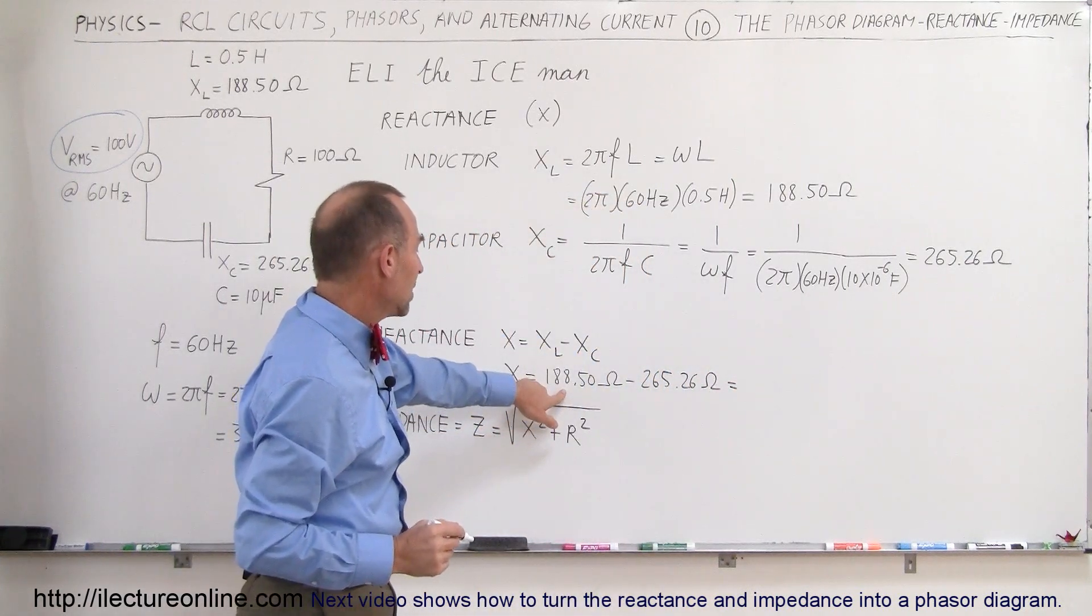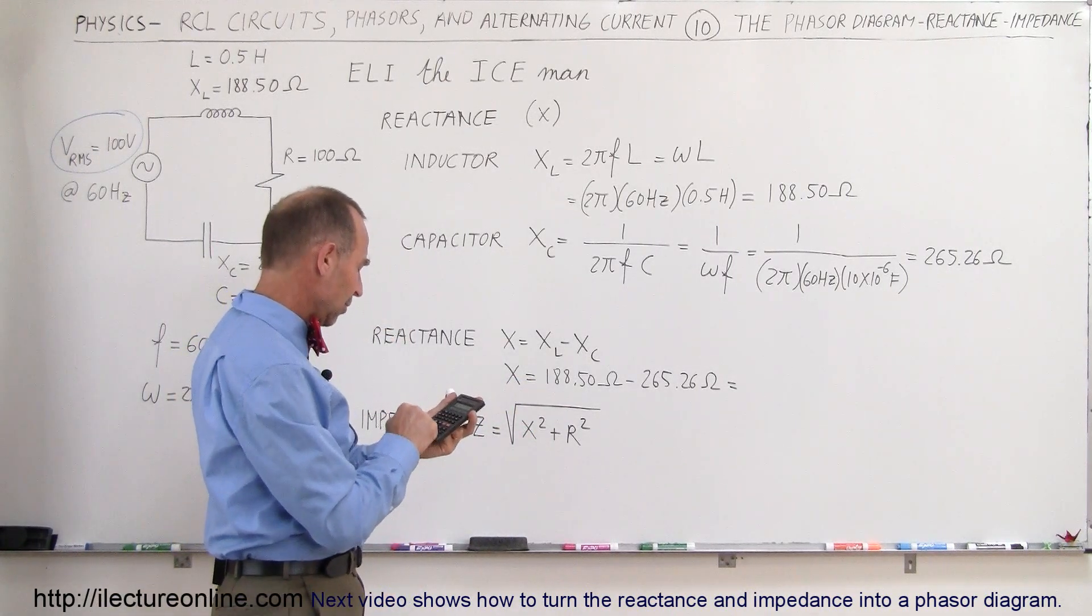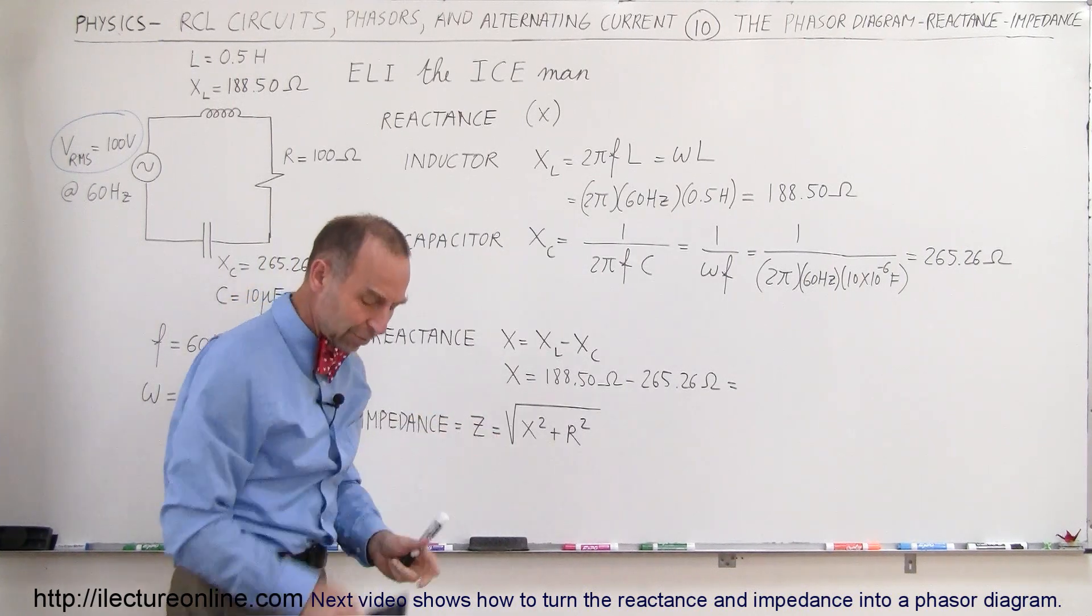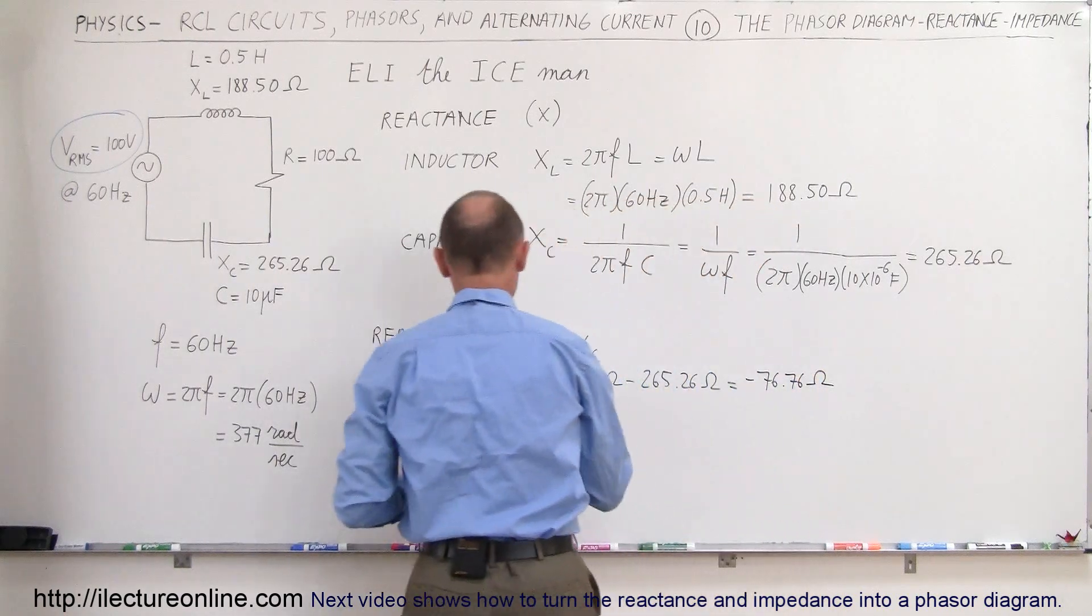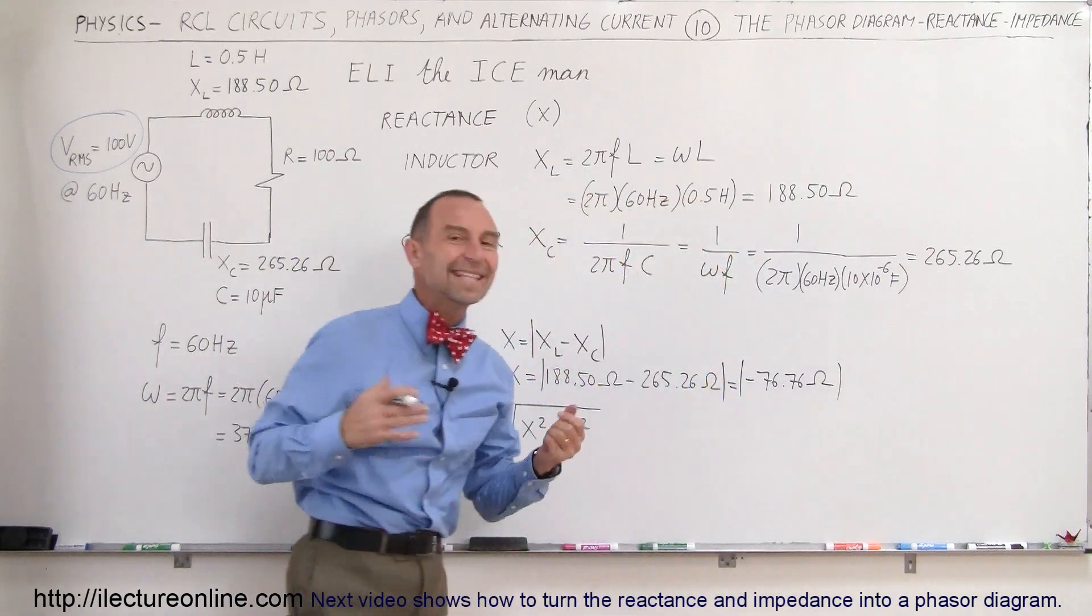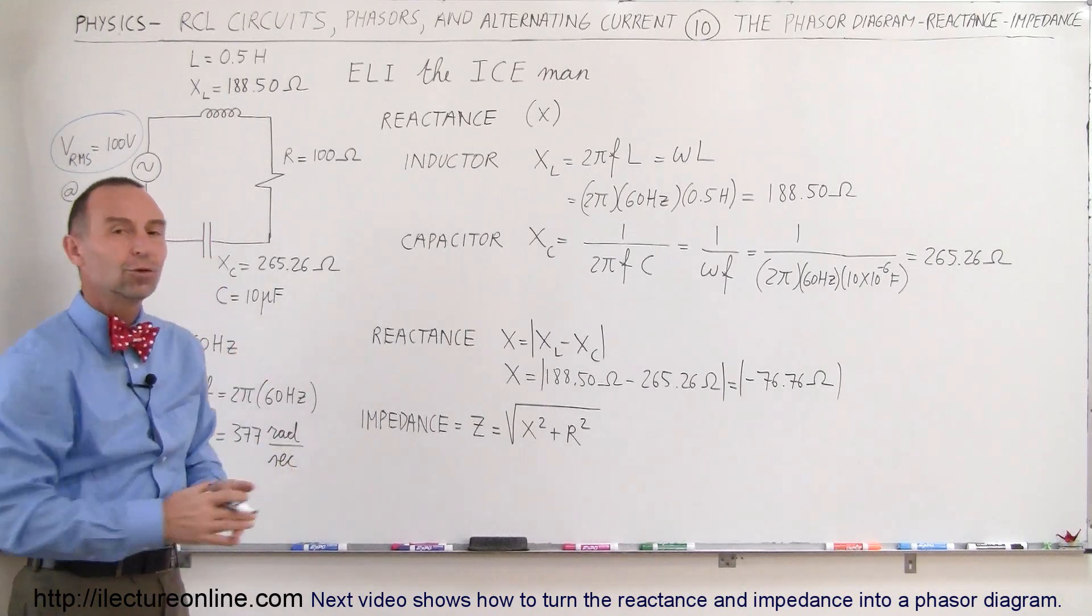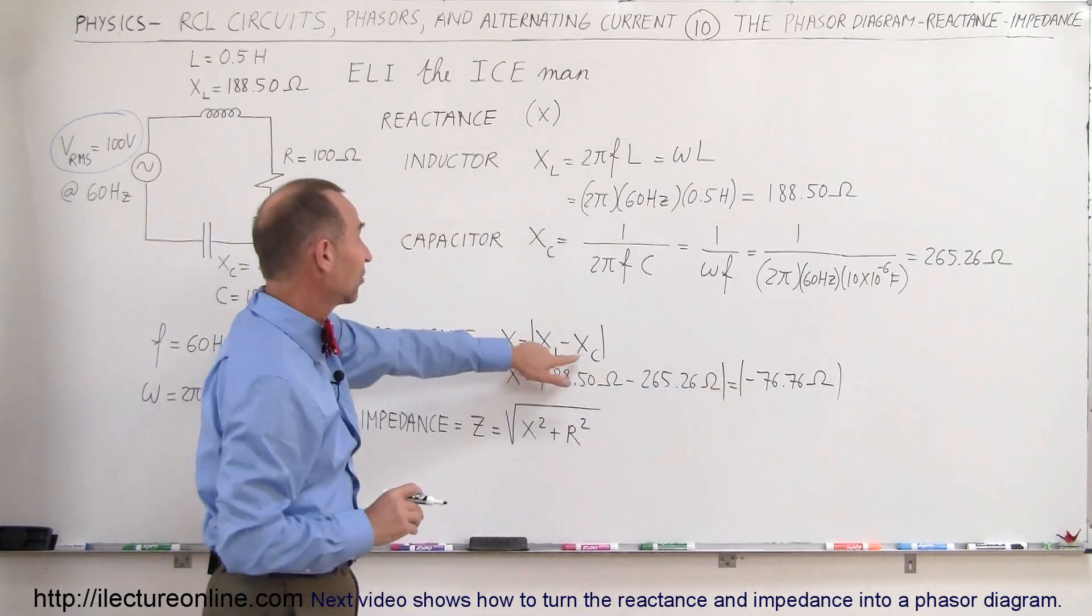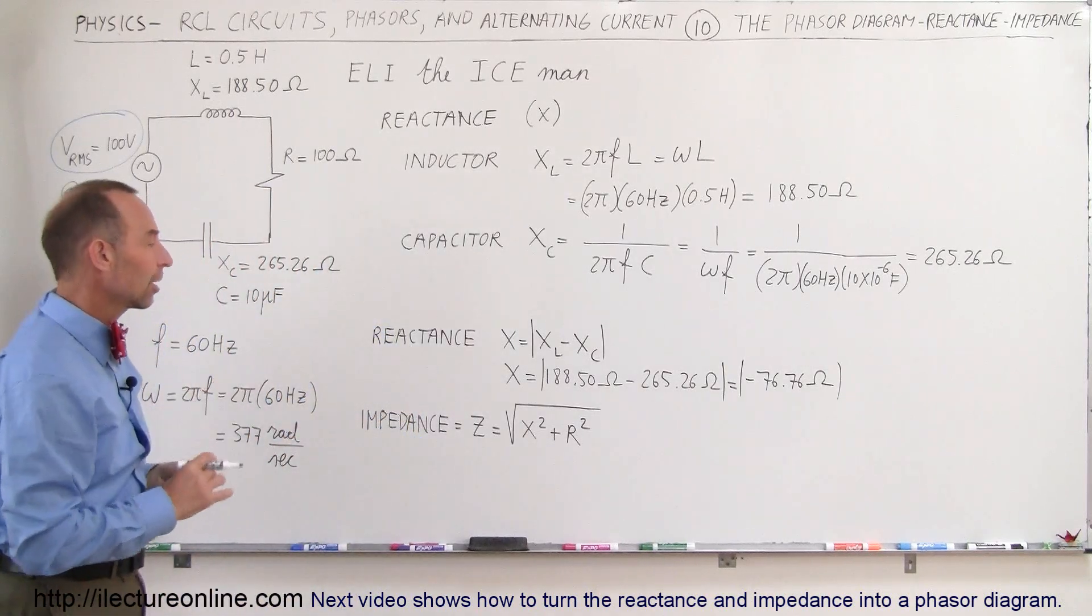And let's see here, let me just use a calculator. 188.5 minus 265.26, and that's -76.76 ohms. Now again, what we need to do is put absolute value signs around it, because even though we get a negative value, there's no such thing as negative resistance or negative reactance. There's always opposition to the current. So we realize, though, since we got a negative value, since X sub C was bigger than X sub L, we know that this is going to have capacitive properties more so than inductive properties.